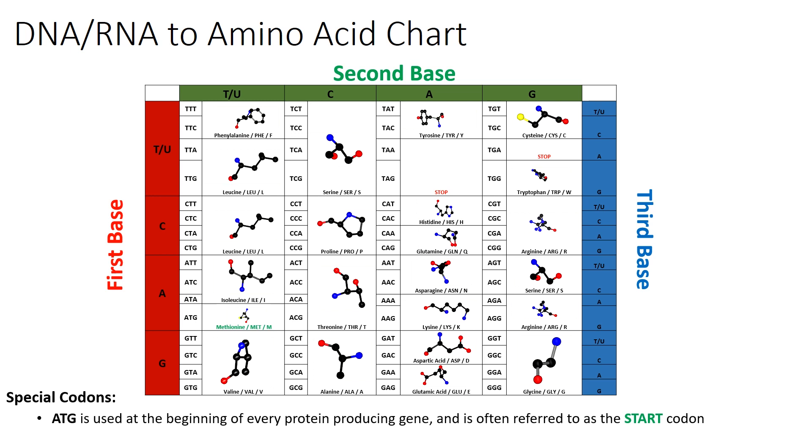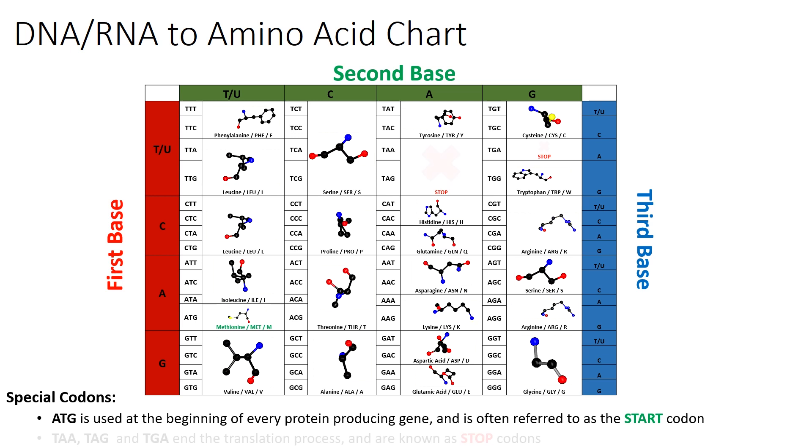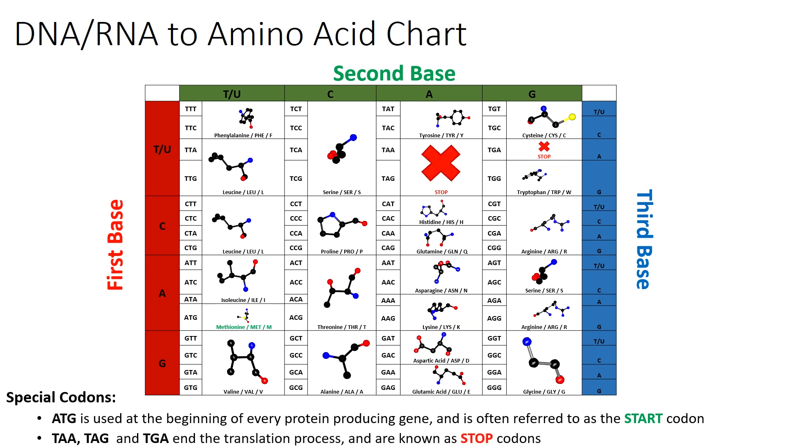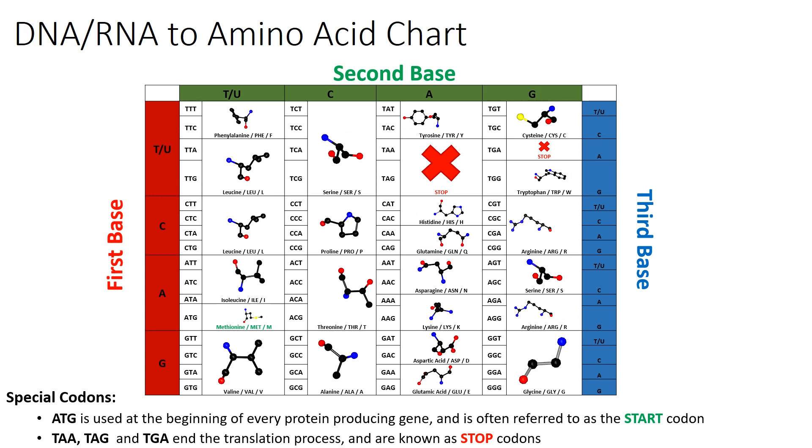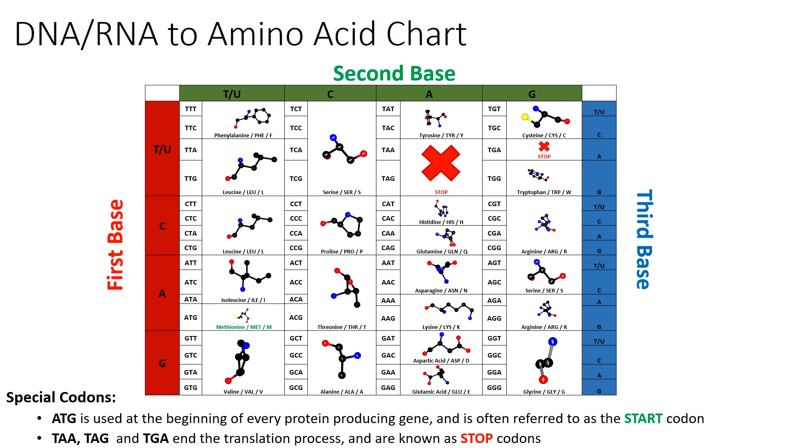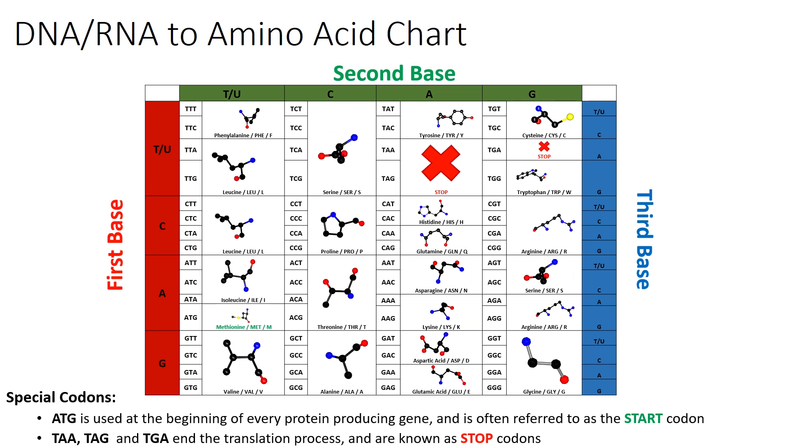Where there is a start, there must also be an end, and as such there are three codons, TAA, TAG, and TGA, that tell the ribosome to stop the translation process, and as such are known as stop codons.